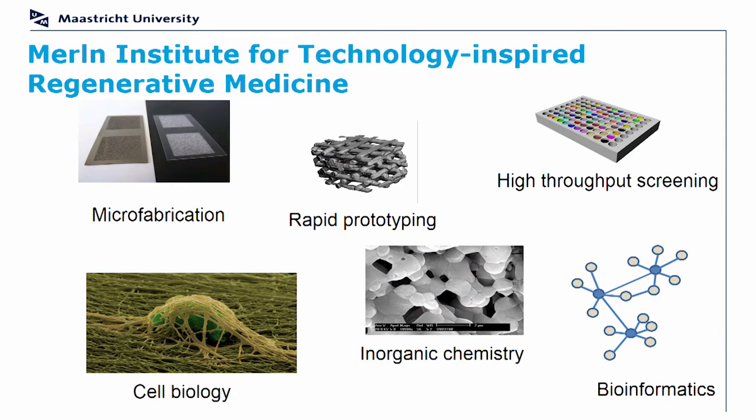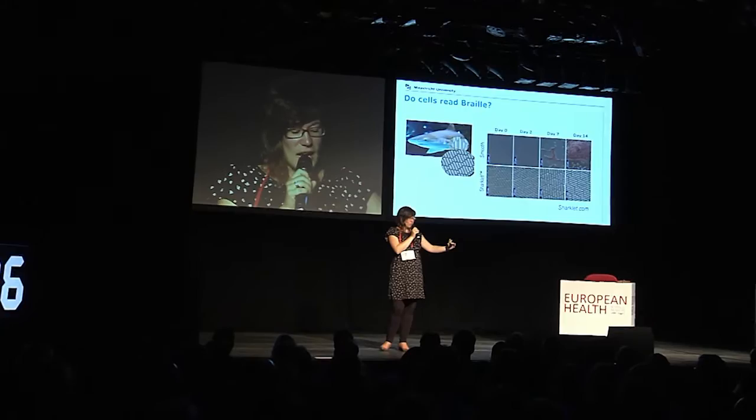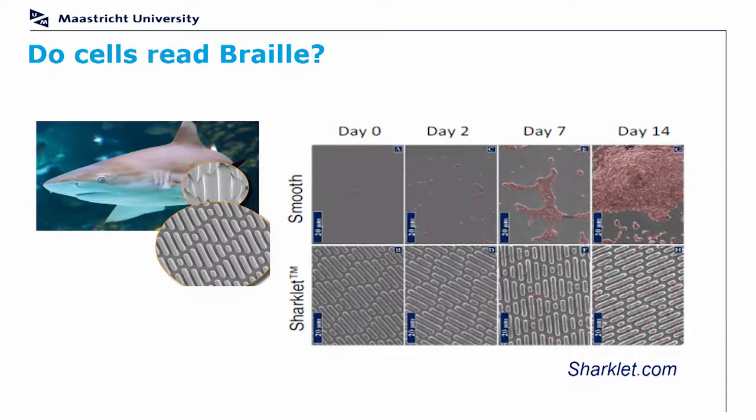The main question we are interested in is whether cells can read Braille. A very nice example is shown here: it was noticed that shark skin actually allows for very little bacterial growth and bacterial attachment, and this was shown to be related to the structure of the shark skin. They replicated this structure in a biomaterial and showed that due to only the surface topography, there is very little bacterial growth.